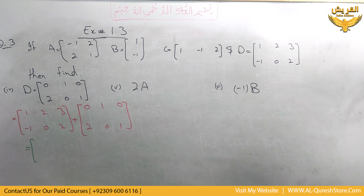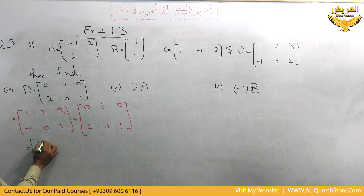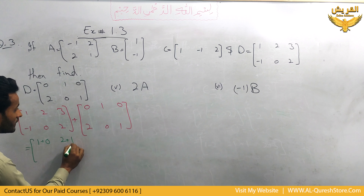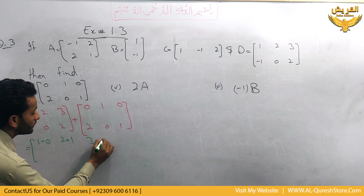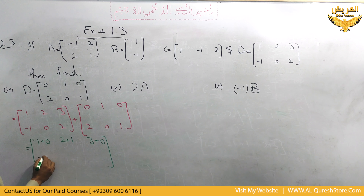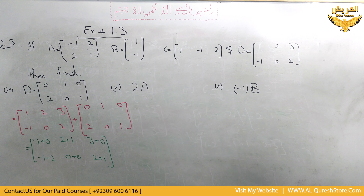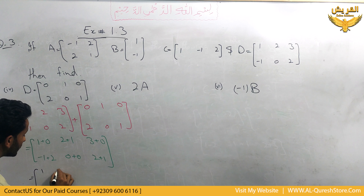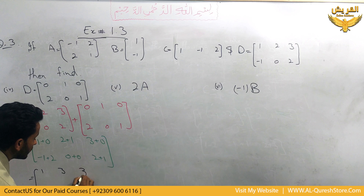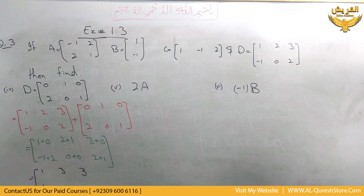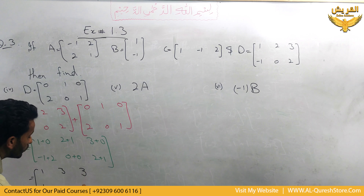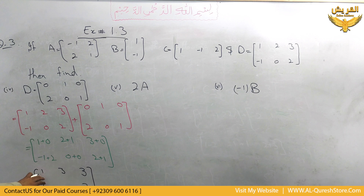We use the rule of addition that corresponding entries are added into each other: 1 added to 0, 2 added to 1, 3 added to 0; then minus 1 added to 2, 0 added to 0, and 2 added to 1. So the answer becomes: 1, 3, 3, 1, 0, 3. This is the answer of the addition of D with this matrix.